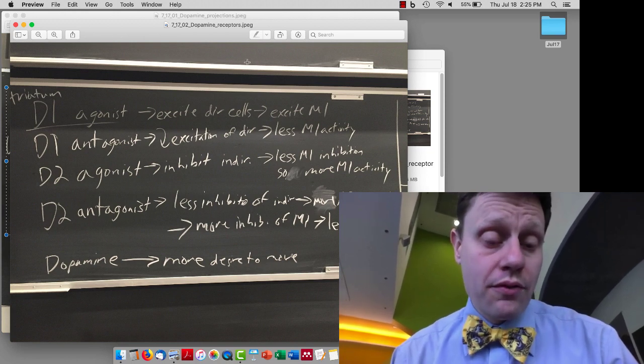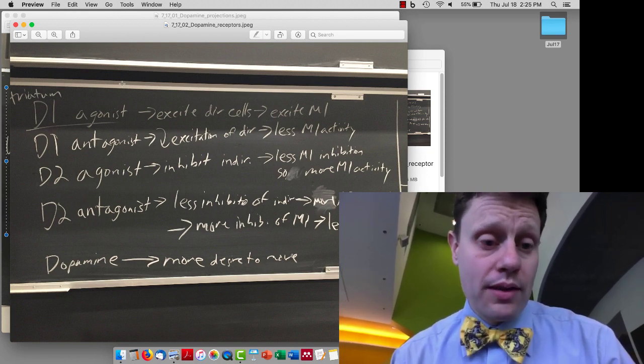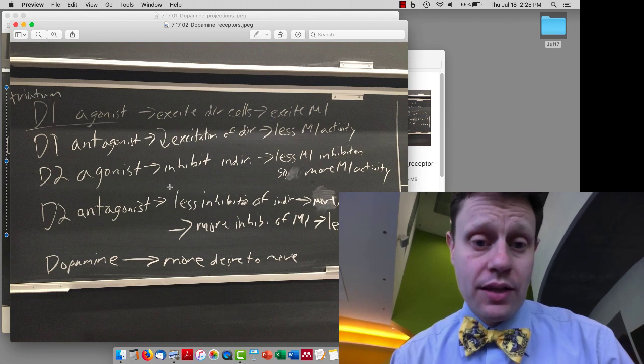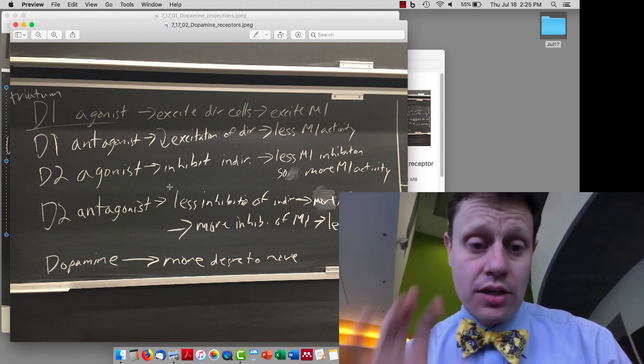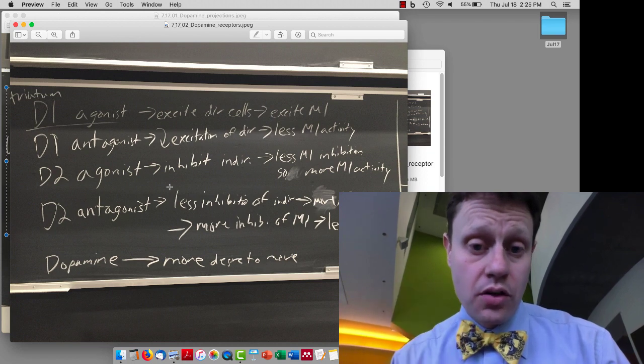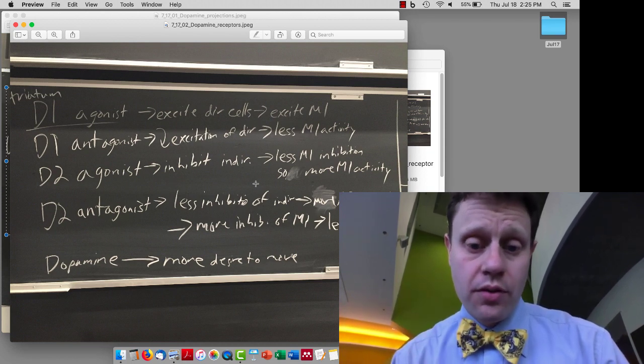We talked about the different receptors and what's going to happen with agonists and antagonists of each, both in terms of excitation inhibition of the cells, which cells they're on, and the ultimate consequences for the motor cortex.